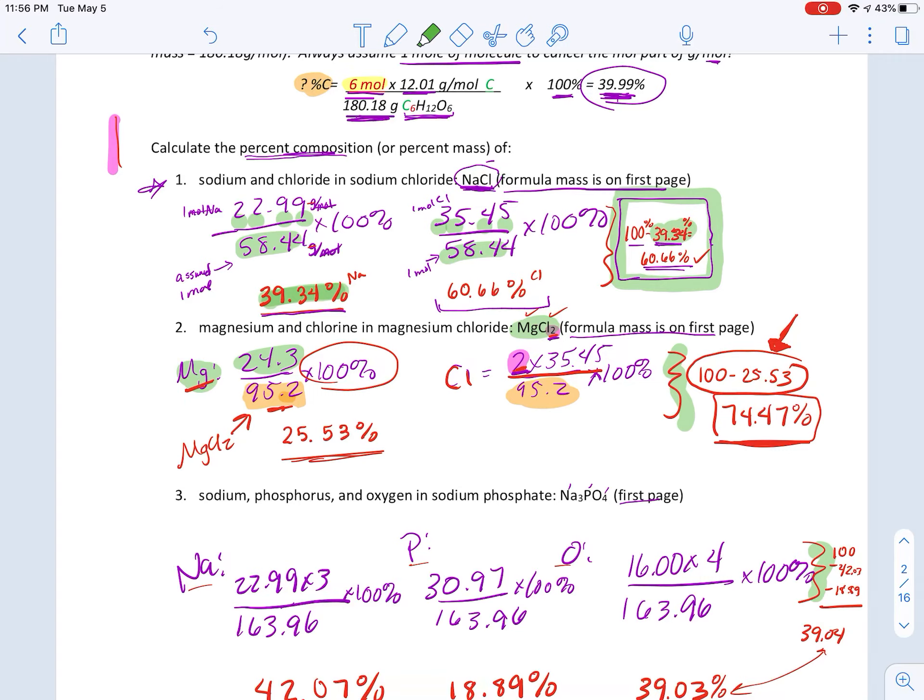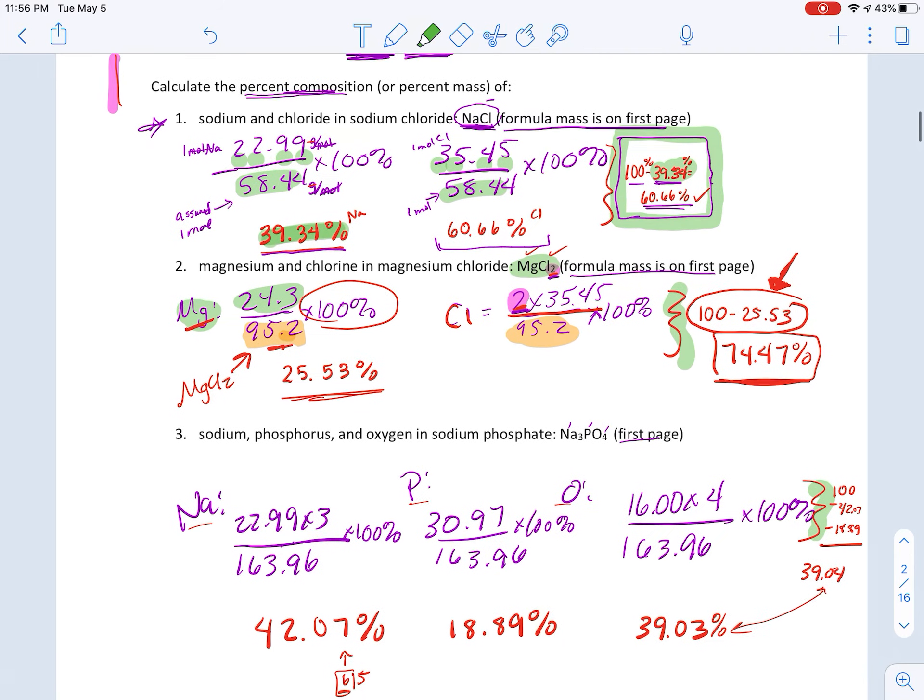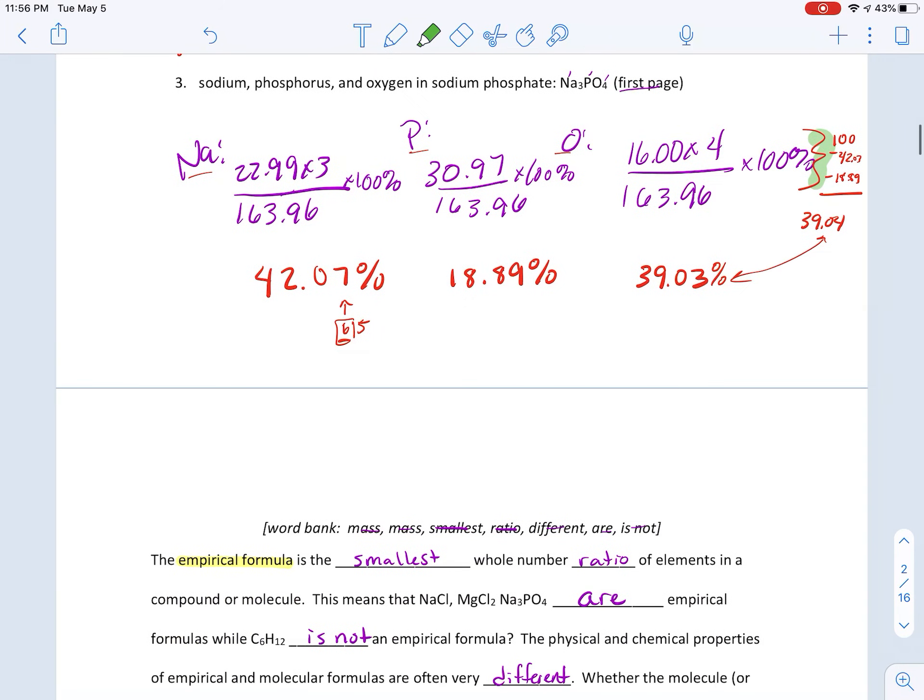And in this bottom one, there were three things. So if you knew two of them, you could subtract them from 100 and get to your percentage. That's percent composition or percent mass.